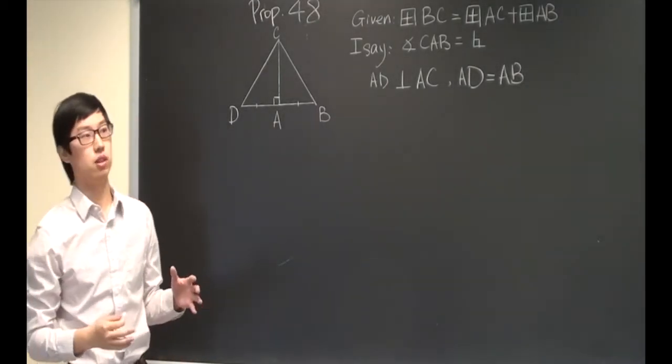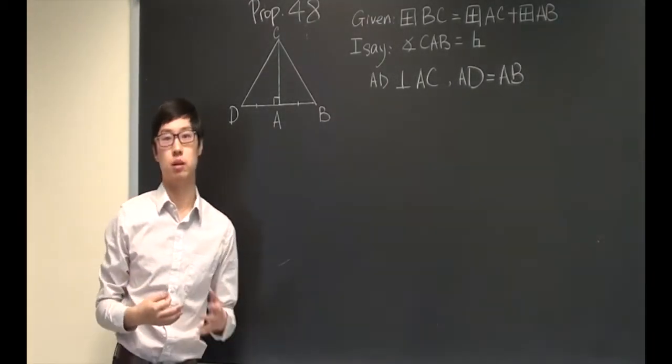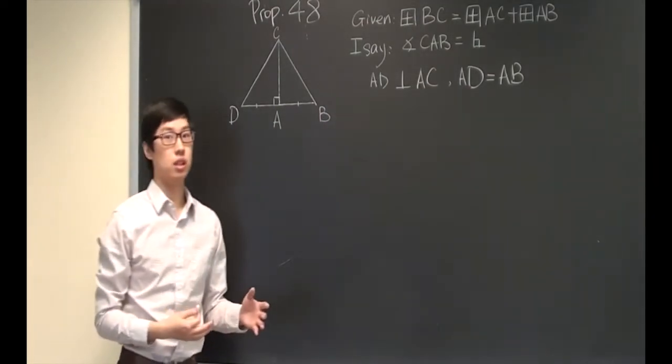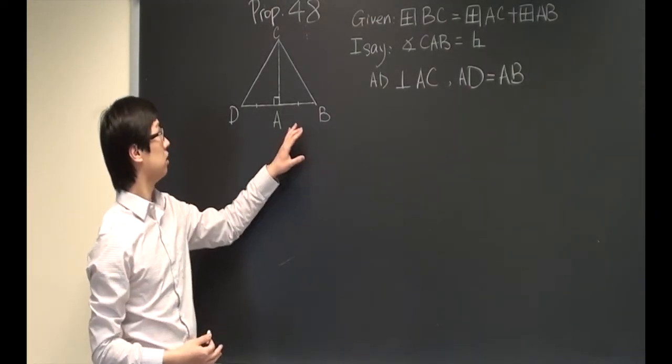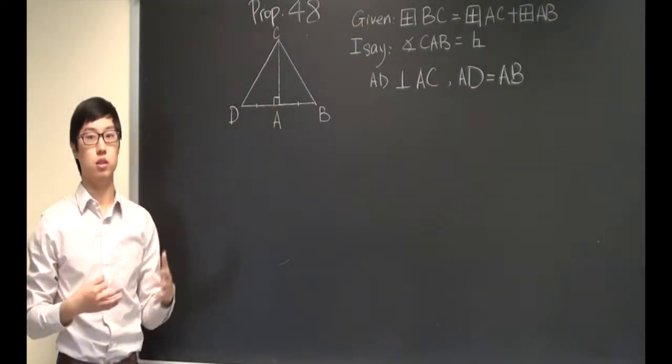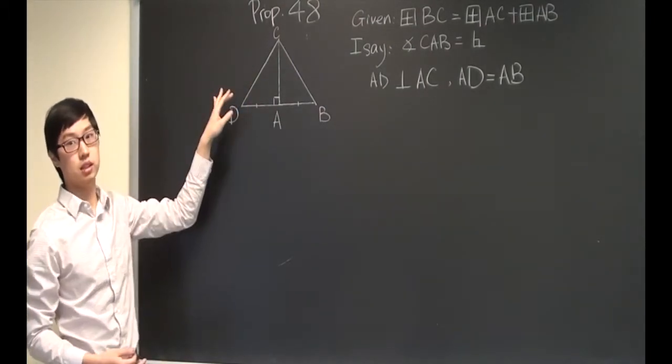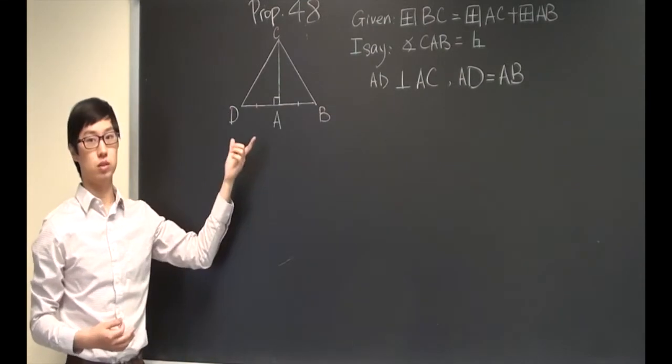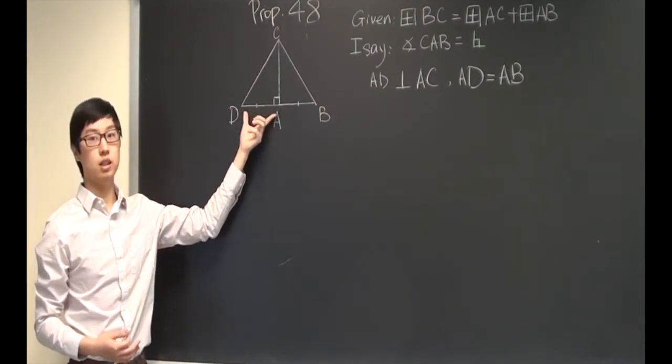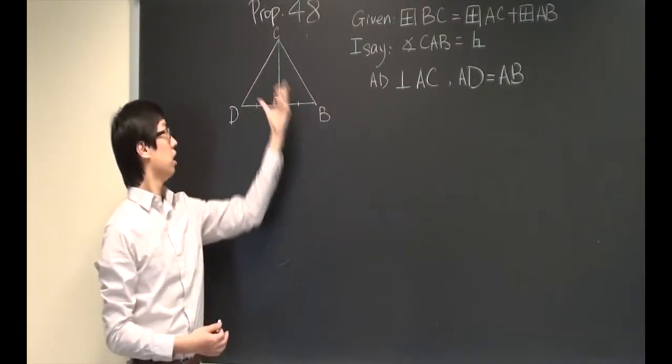From the previous proposition, Proposition 37, we know that in a right angle triangle, the square on CD is equal to the sum of square on AD and the square on AC.